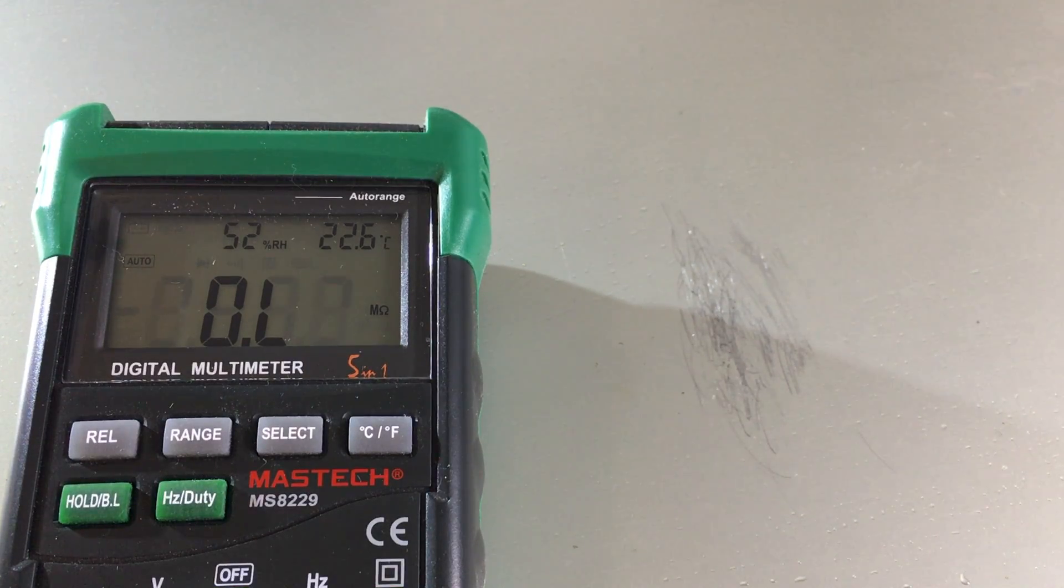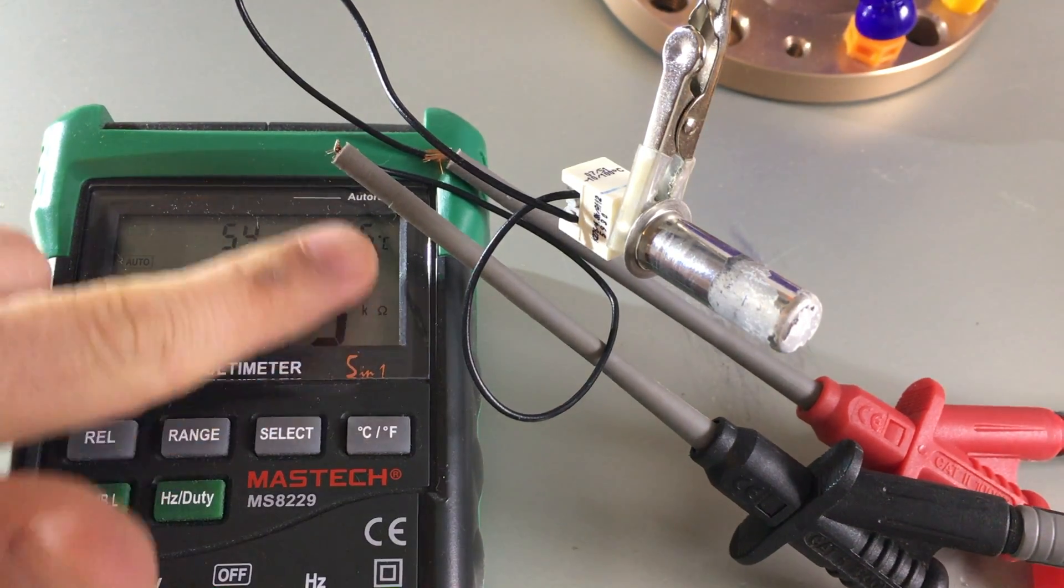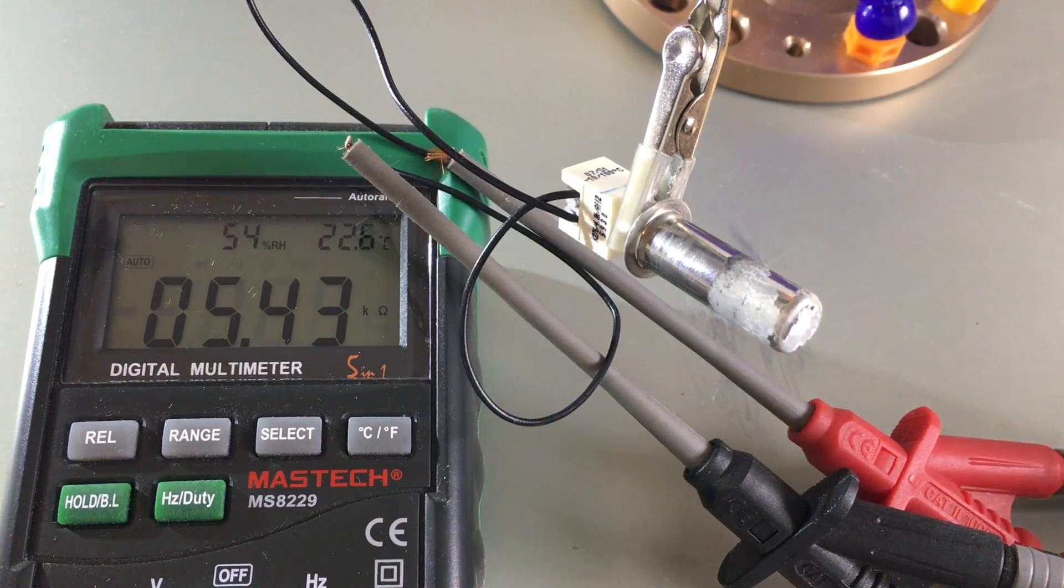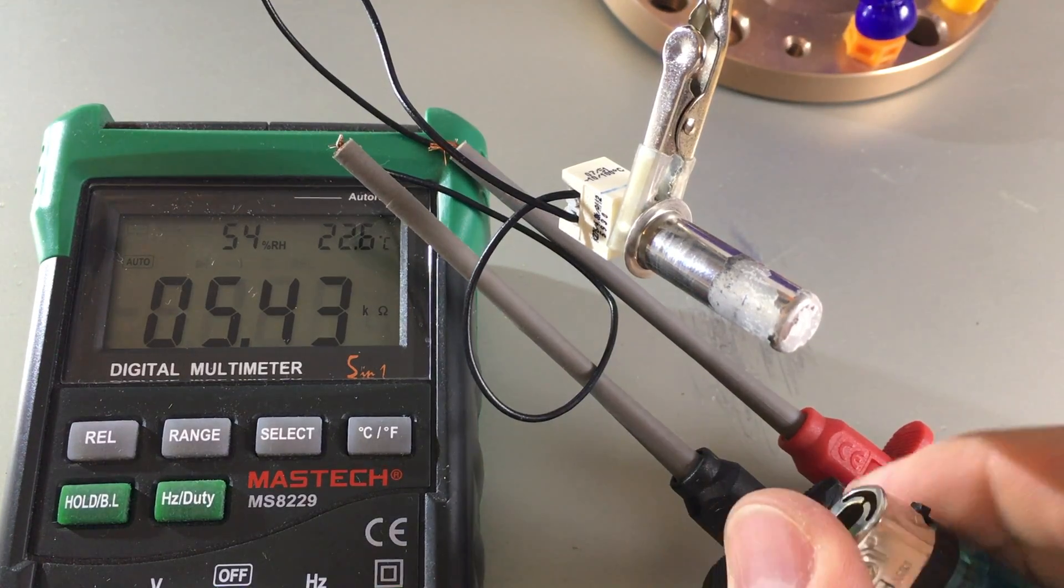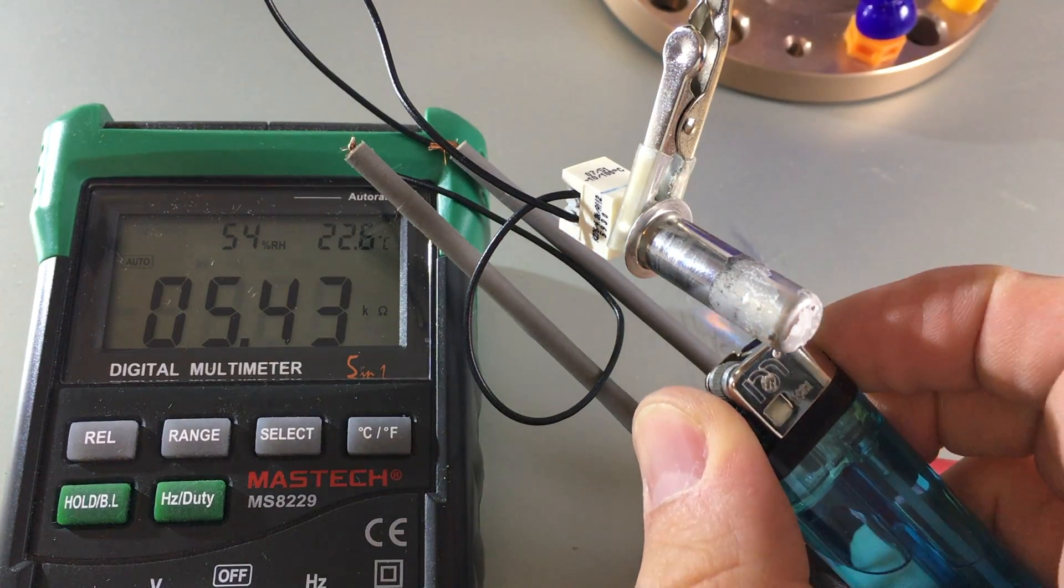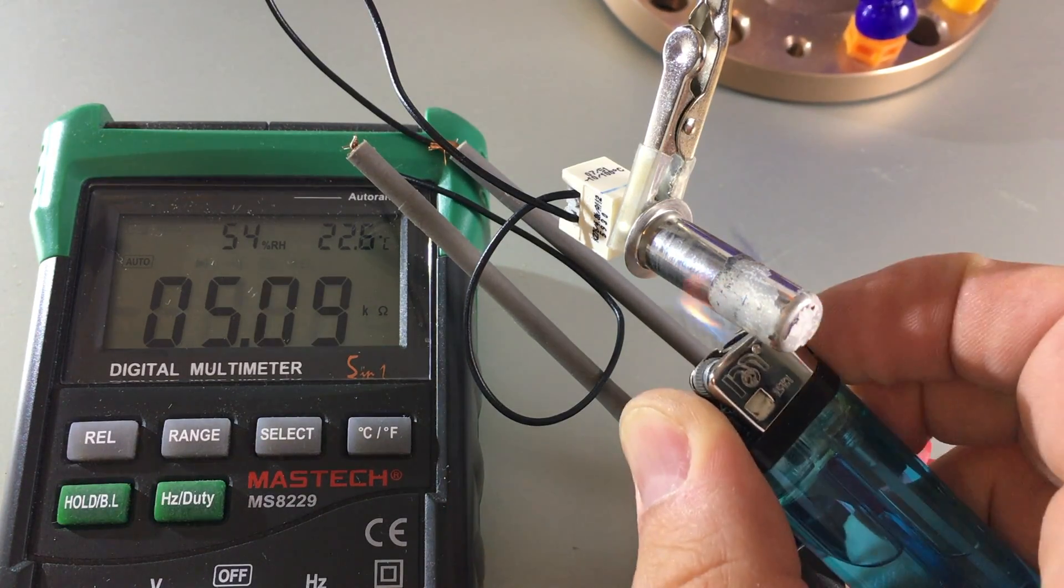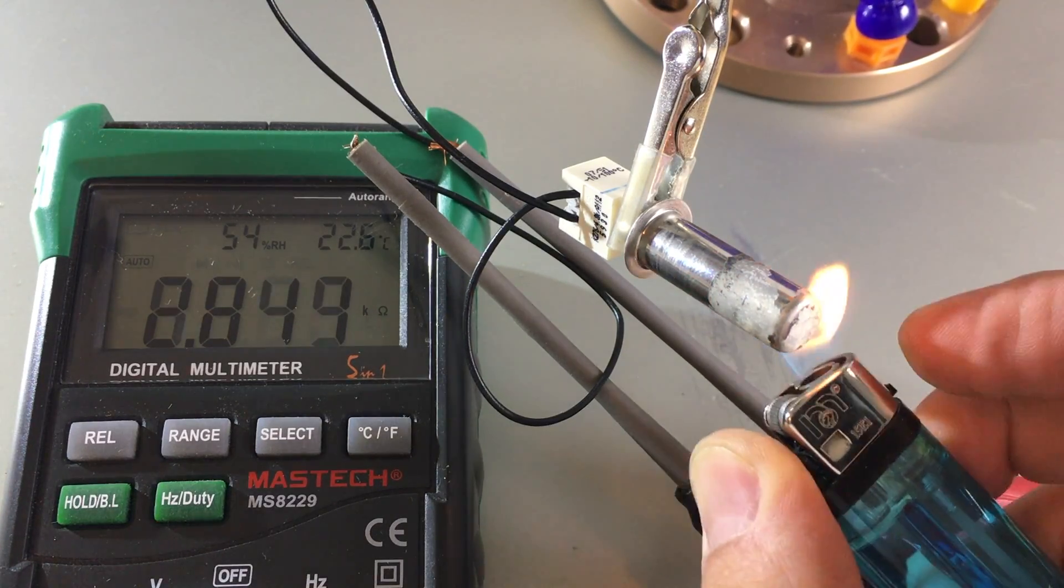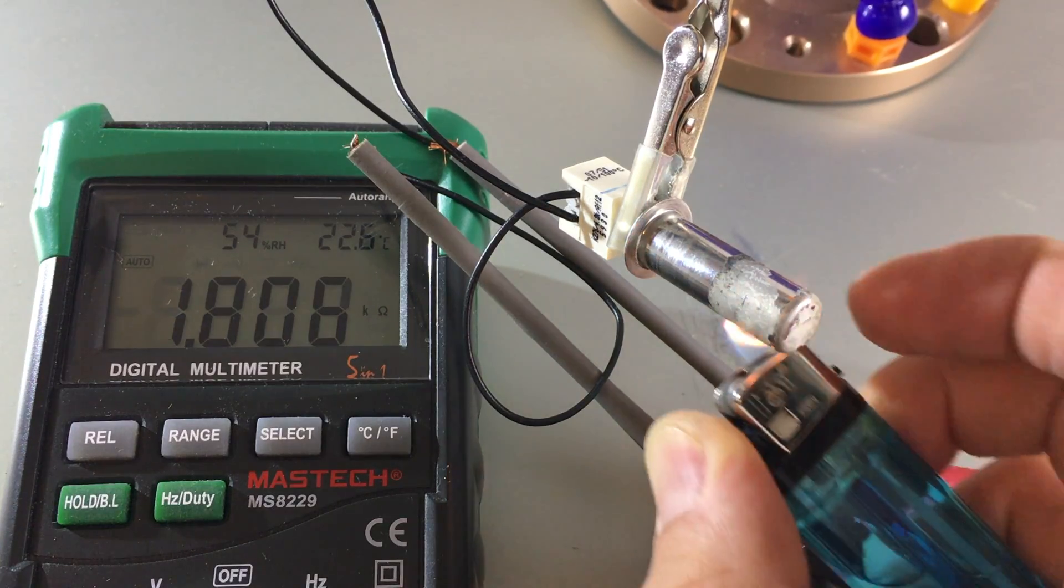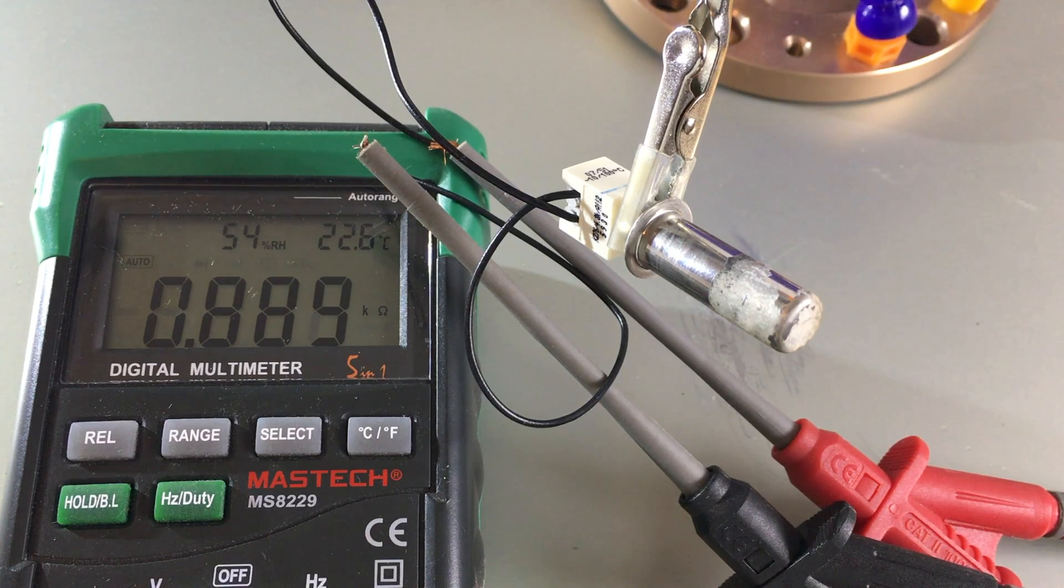Now we can have a look at the temperature sensor. So we had 5.5 kilo-ohms at 22 degrees. So now the easiest way to get this warm is to take open fire and we see what happens. Hello, the resistance is decreasing. Voila, this is the temperature sensor.